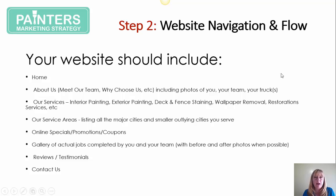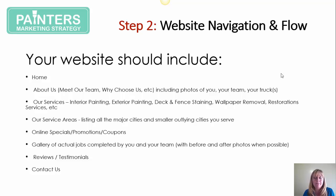You also want to be cognizant of your website navigation and flow. Your website should include, in addition to the obvious homepage, some additional information on your about us page. Really try to build that out and aim for about 300 words of text. Include some information about your team, a call to action, and reasons why your prospects should choose you versus your competitor. Include photos of you, your team, and your trucks so that prospects feel like they know you before they even pick up the phone to call or email you.